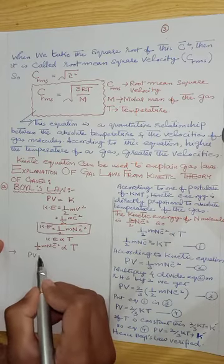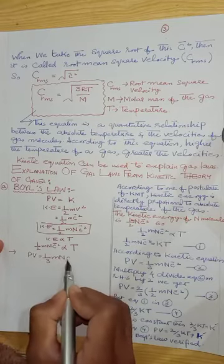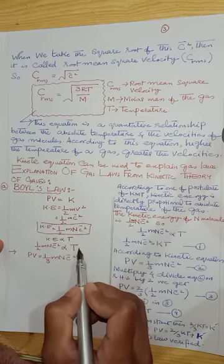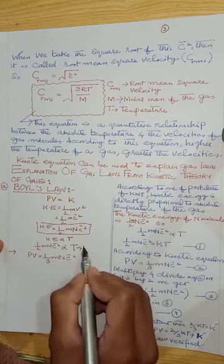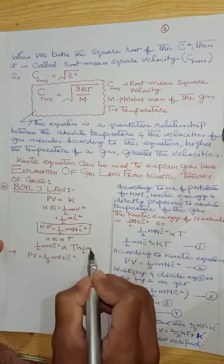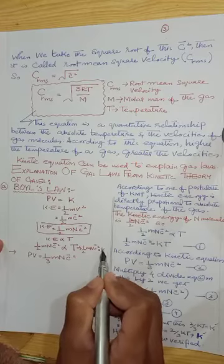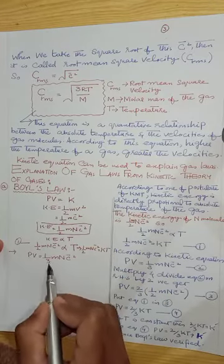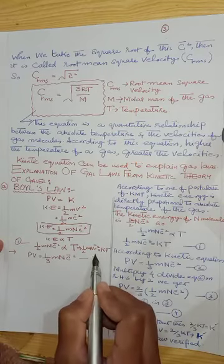According to the kinetic equation, PV = 1/3 mnc̄² — this is equation 2. In finalized form, ½mnc̄² = kT — this is equation 1.